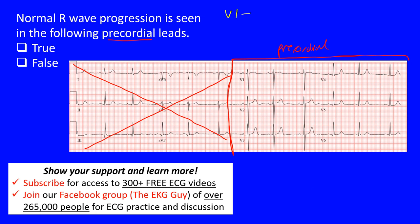V1 through V5, you should see an increase in R wave progression, or you should see an increase in the R wave to S wave amplitude. So here's V1, V2, V3, V4, and V5. We're going from the right side of the heart all the way to the left side. These are the precordial leads — the ones we put right on the center of the chest, on the precordium — and they're going from right to left. Normal R wave progression should increase.